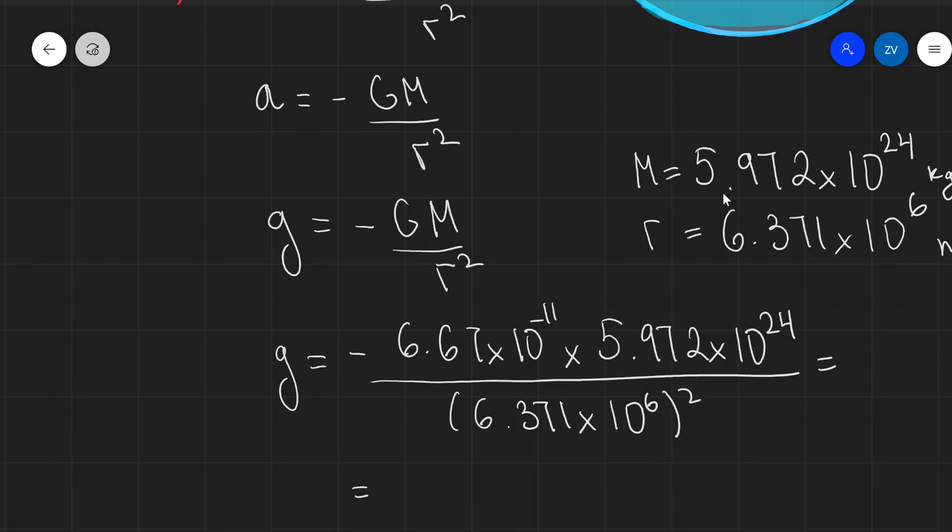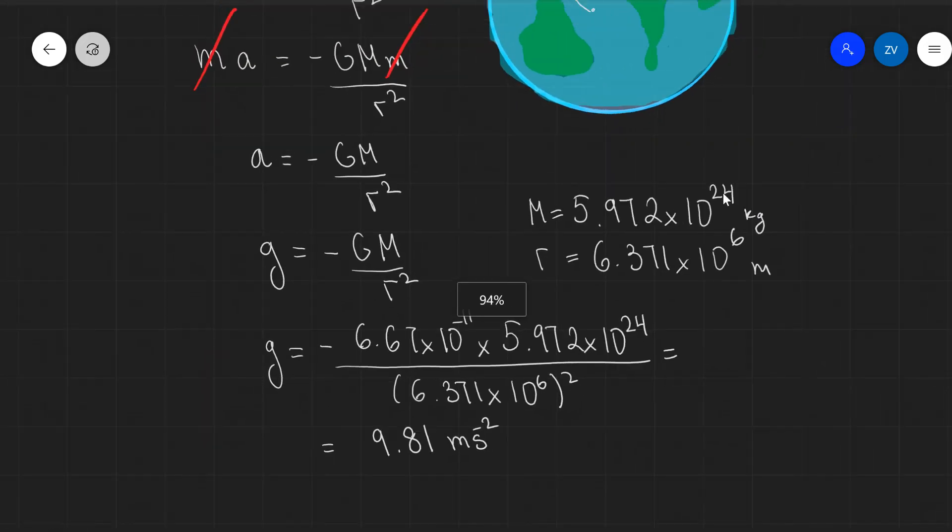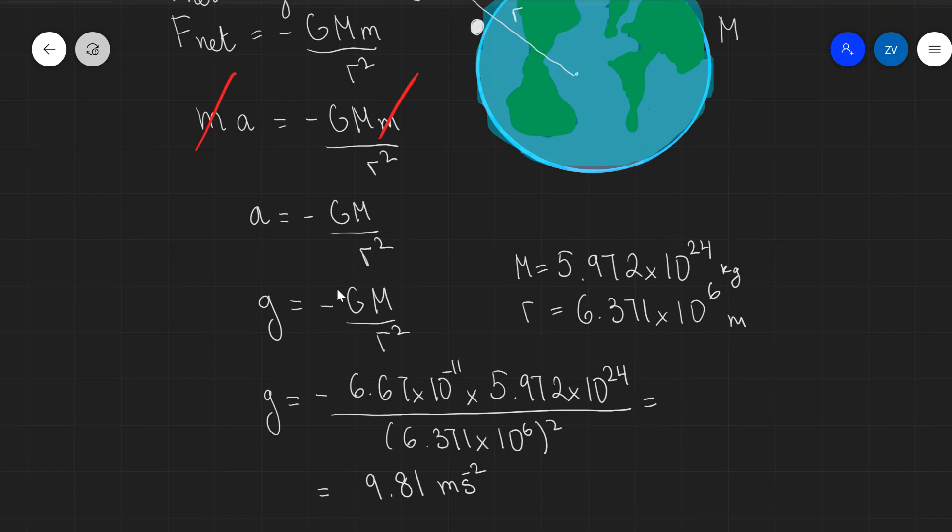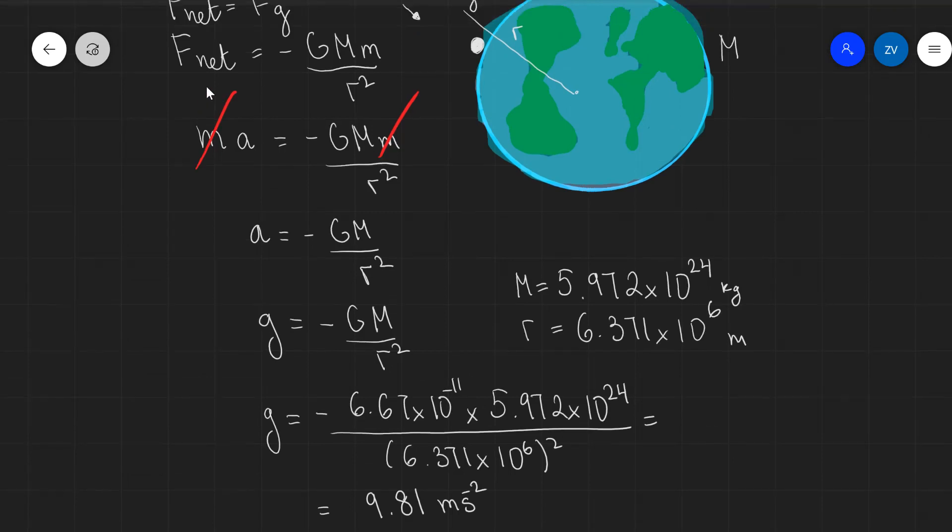And if we were to put this into a scientific calculator, lo and behold, we are going to get 9.81 meters per second squared. So what we've done in this video is we've shown that the formula for gravitational acceleration is a natural consequence of Newton's second law, Newton's law of gravitation. g is equal to minus GM over r squared.